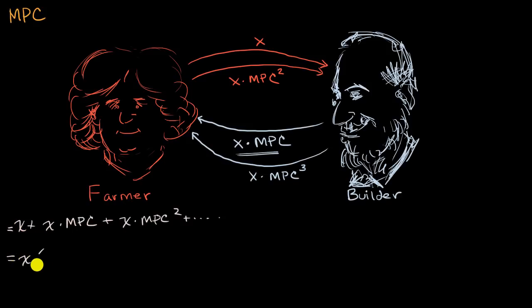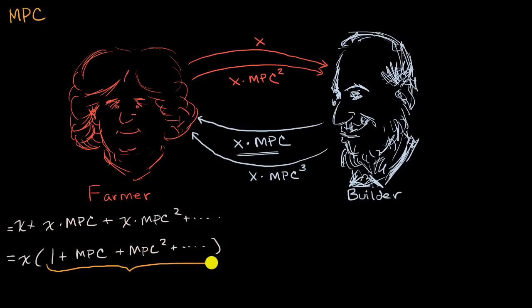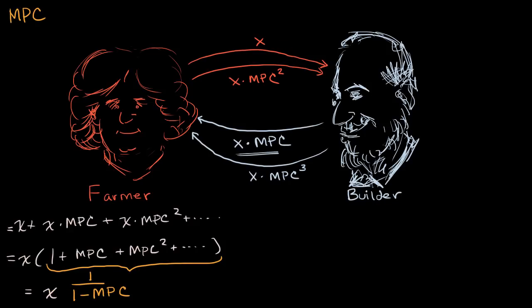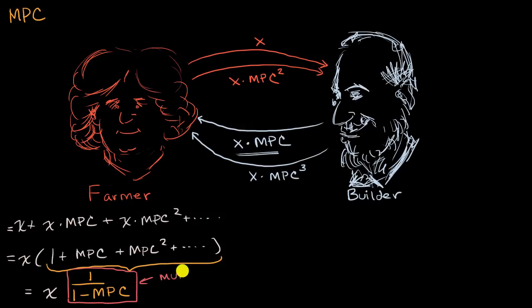We can factor out X, giving X times (1 + MPC + MPC² + ...). You might recognize from algebra or pre-calculus that this is an infinite geometric series. And you can actually sum this up — one of the cooler things in mathematics. It equals 1 over (1 minus MPC). So the total output is X times this expression, which is why this expression is known as the multiplier. If the farmer spent $1 initially, the total increased output in this simplified economy is $1 times the multiplier.